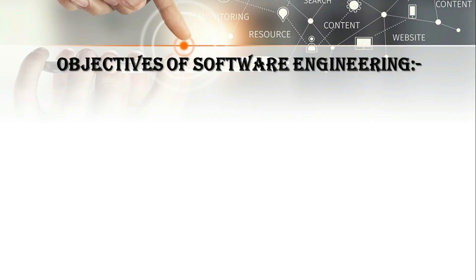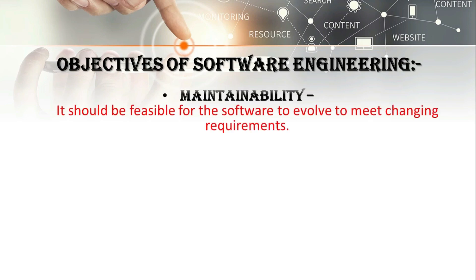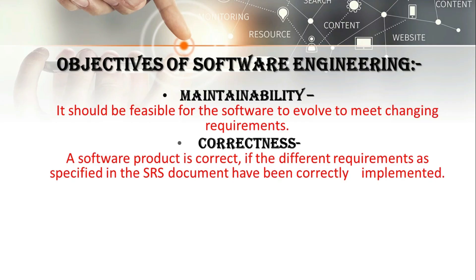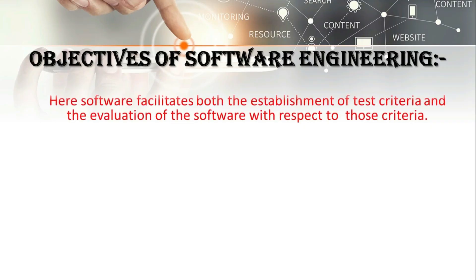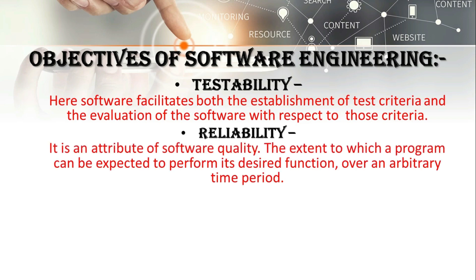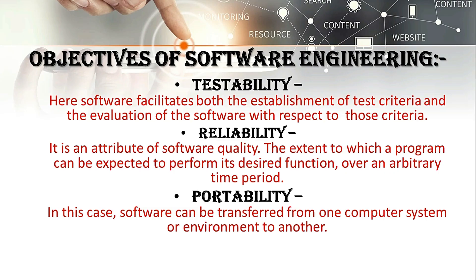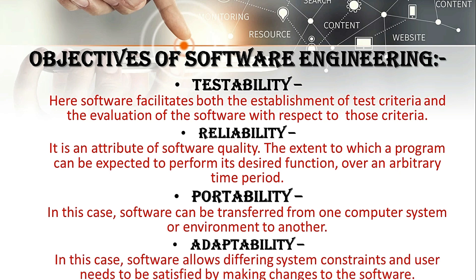Now let's come to the characteristics of software engineering. It has many characteristics: it is maintainable, it is correct, it is reusable, it is testable, it is reliable, it is portable, and adaptable.